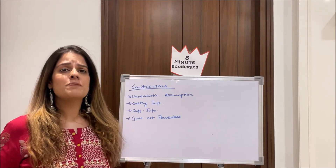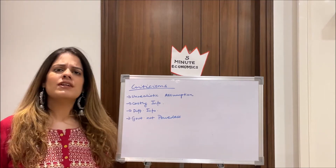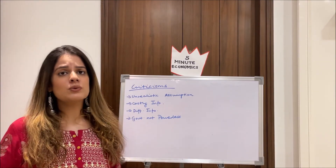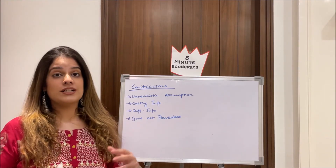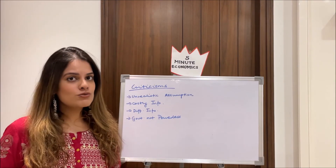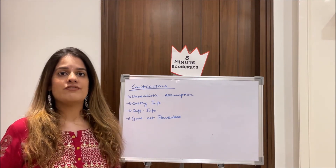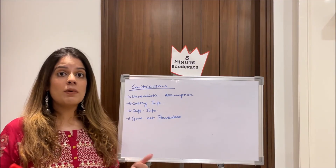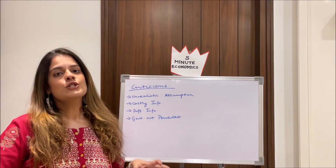Coming to the criticisms of RATEX: first, unrealistic assumptions — the assumption that everyone knows everything is very impossible; large firms might, but for small firms or individuals to have all information is unrealistic. Second, costly information — it's not easy to collect, disseminate, and distill information, so saying everyone has the information isn't true. Third, different information — the information the government holds and the information economic agents hold may vary. And lastly, government not powerless — concluding from RATEX that monetary and fiscal policies are ineffective implies government has no power, which has been highly criticized, as the government in fact has a lot of power to influence the economic sphere.